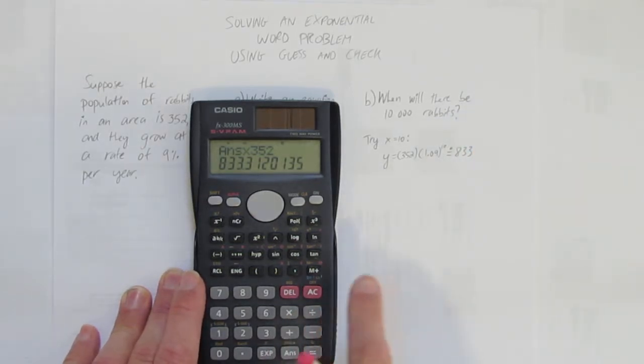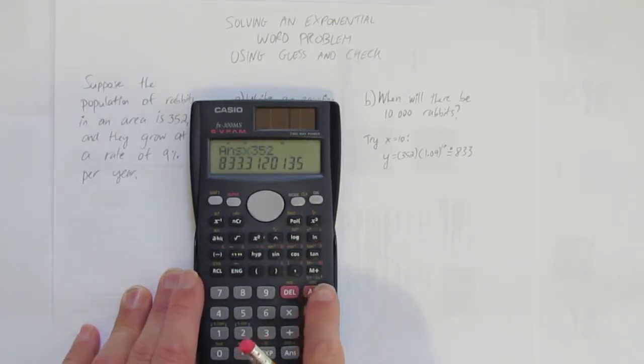And so you can't really have half a rabbit and it still be a living rabbit. But notice I'm way short of 10,000. I went up a fair bit, but not enough.